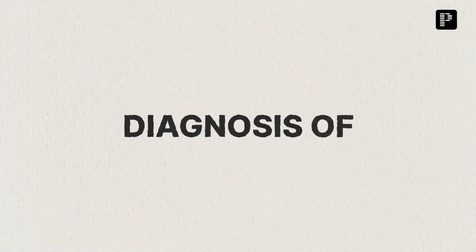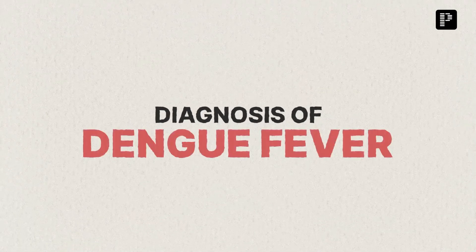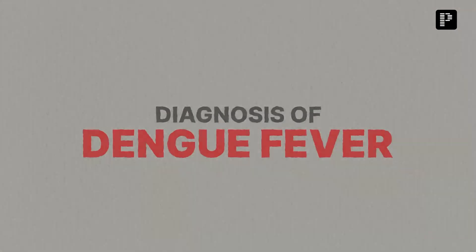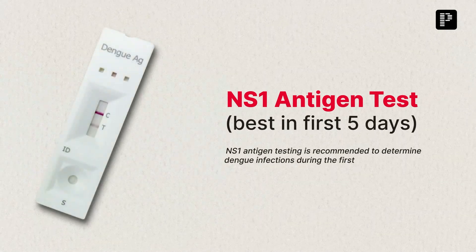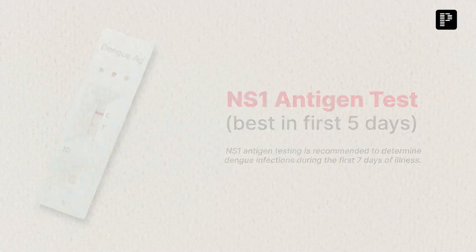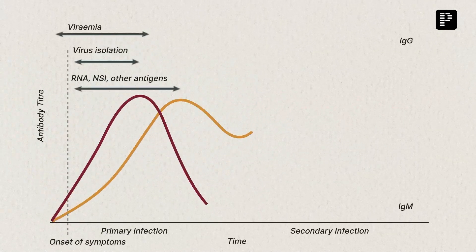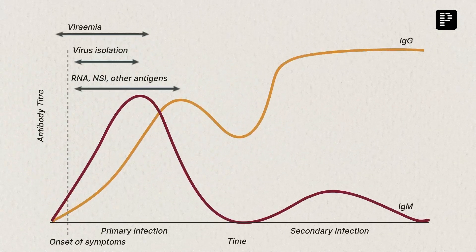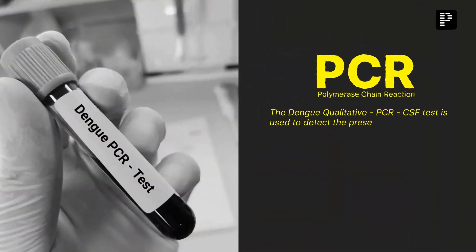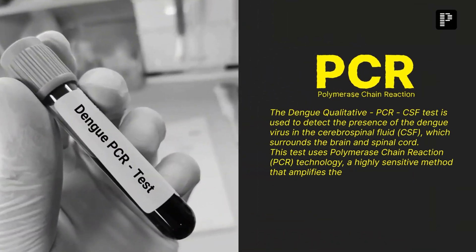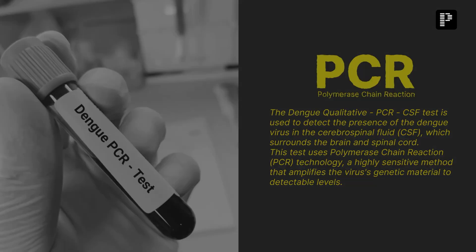To confirm the diagnosis, conduct an NS1 antigen test within the first 5 days of the illness. Use an IgM-IgG antibody test after 5 days. Opt for PCR when necessary to detect the virus.